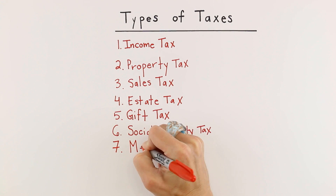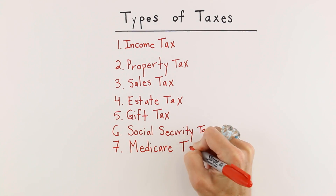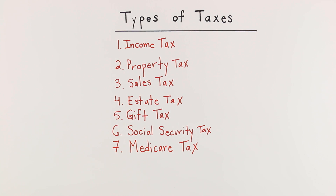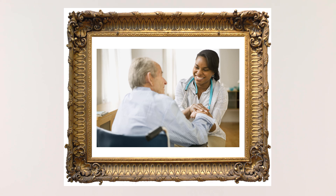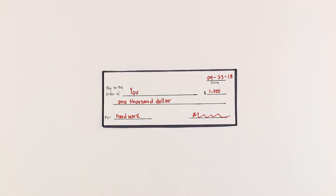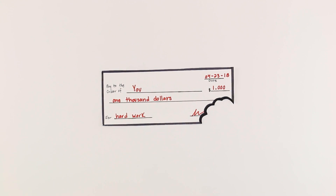The next type of tax is the Medicare tax. Medicare is a health insurance program for the elderly and disabled. The Medicare tax is also taken from your paycheck.